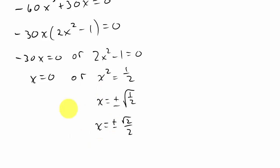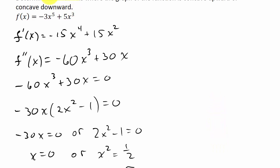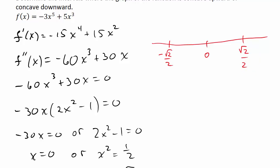So here are our zeros: the second derivative is zero when x equals zero and x equals plus or minus square root of 2 over 2. We take these three values and put them on the number line, giving us negative square root of 2 over 2, zero, and square root of 2 over 2. This breaks the number line up into four regions.